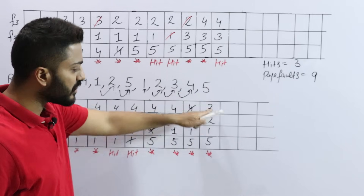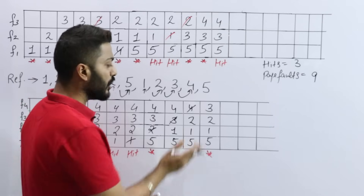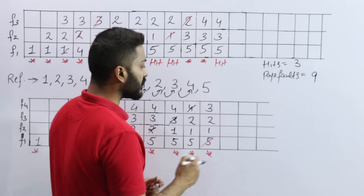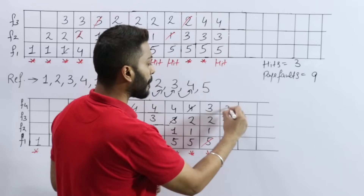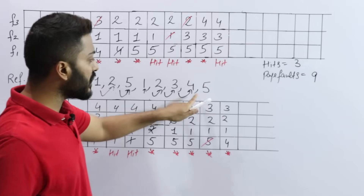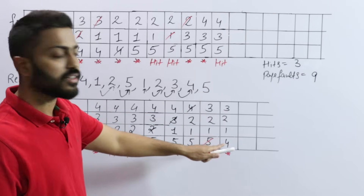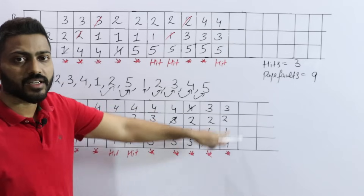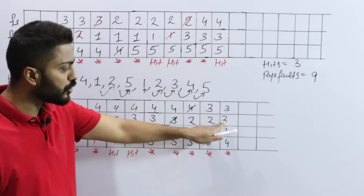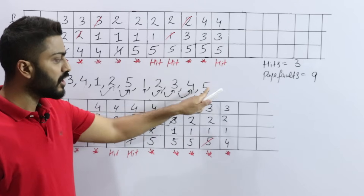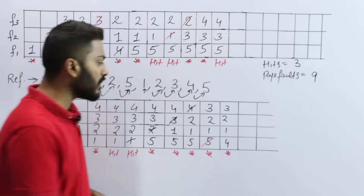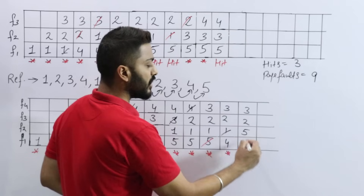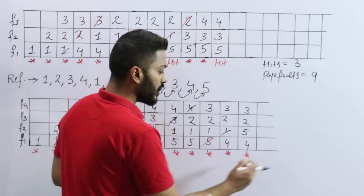Page number 4 is demanded. Page 4 is not present, so we go back to frame 1 (cycling through frames 1, 2, 3, 4 again) and replace frame 1 with page 4 — page fault. Then page number 5 is demanded. Page 5 is not present. Frames currently hold pages 4, 1, 2, 3. We replace frame 2 with page 5 — this is also a miss (page fault).